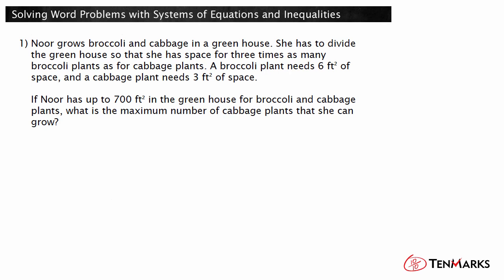Start by defining the variables. Let B be the number of broccoli plants and let C be the number of cabbage plants. Noor has up to 700 square feet of space to grow broccoli and cabbage. Use the symbol less than or equal to to represent this constraint.